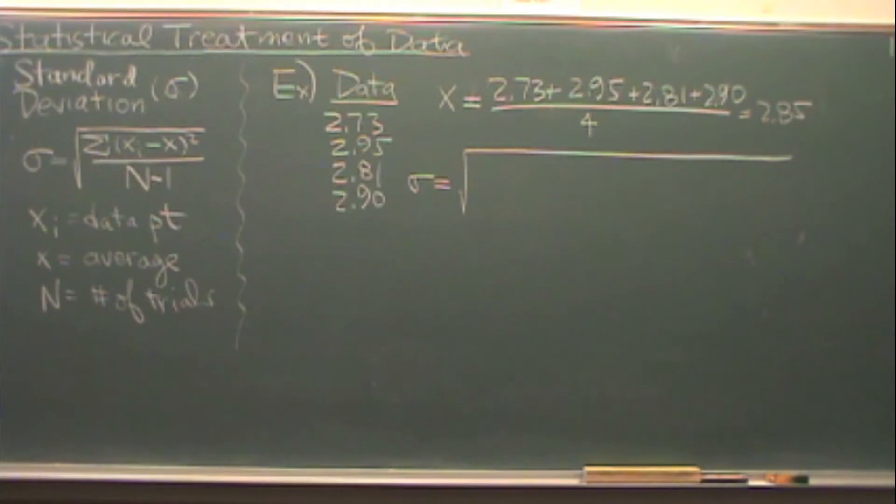We're symbolizing by sigma, and it's the square root of the sum of your data point, that's xi, subtracted from the average. So basically you're taking the difference from the average, you're squaring it, and divided by n minus 1. n is not hashtag, but the number of trials.